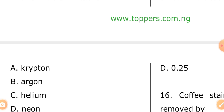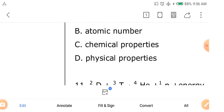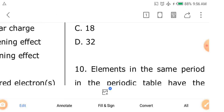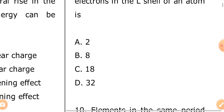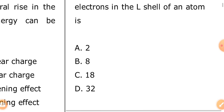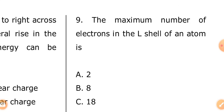Question nine: the maximum number of electrons in the L shell of an atom is — A: 2, B: 8, C: 18, D: 32. The answer is eight — option B. You know the shell configuration; this is part of SS1 work.